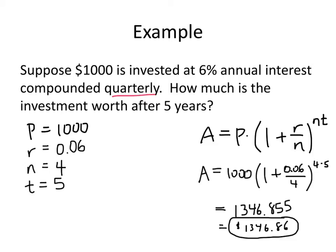You should check this on your own. Make sure that you can enter this in your calculator yourself. The most common mistake that students often have is when you raise that to the 4 times 5, sometimes you forget to put the 4 times 5 in parentheses. So remember that 4 times 5, all of that goes into the exponent.